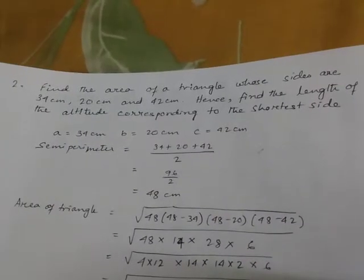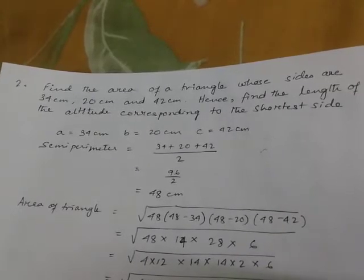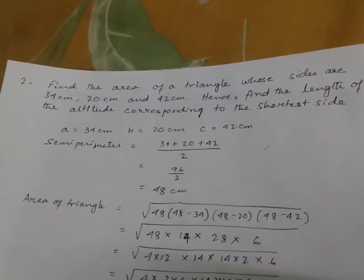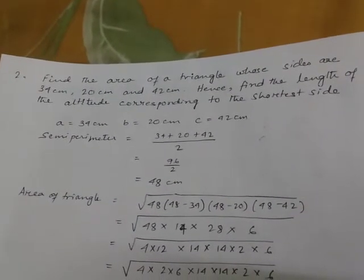Now, next sum. Find the area of a triangle whose sides are 34 centimeter, 20 centimeter and 42 centimeter. Hence, find the length of the altitude corresponding to the shortest side.